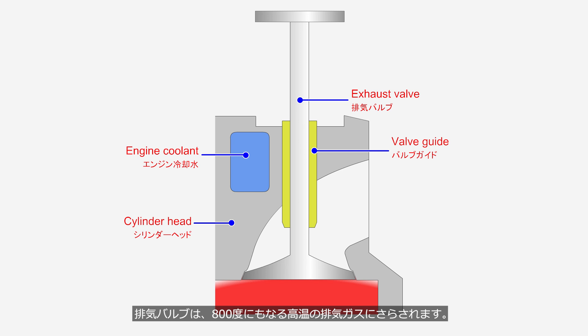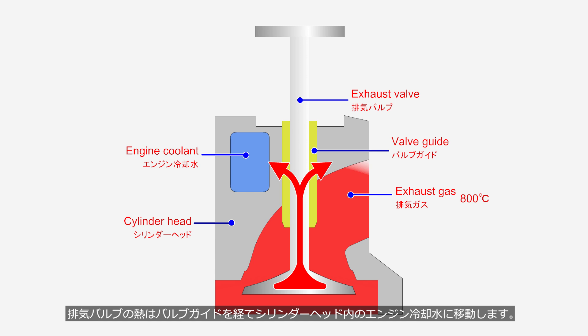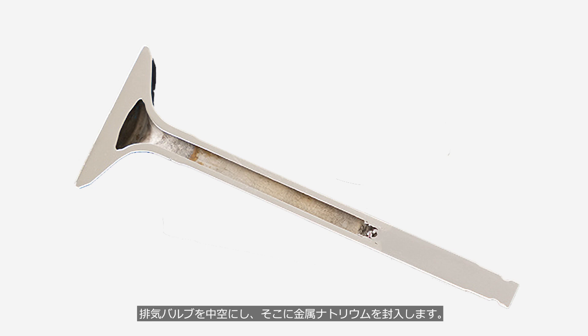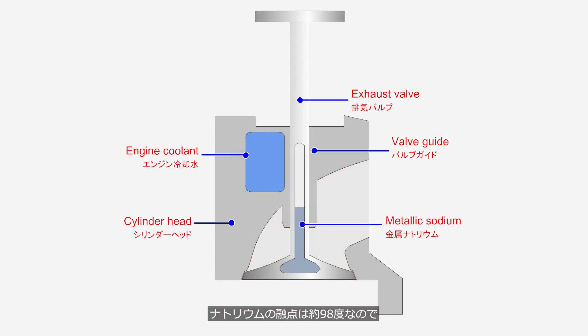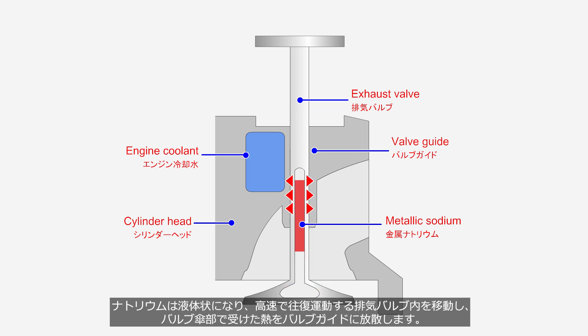The exhaust valve is exposed to exhaust gases that can reach temperatures as high as 800 degrees Celsius. The heat of the exhaust valve is transferred through the valve guide to the engine coolant inside the cylinder head. In thermally demanding engines, such as turbocharged engines, some engines use sodium-filled valves. The exhaust valves are made hollow and filled with metallic sodium. Sodium has a melting point of about 98 degrees Celsius, so during engine operation it becomes liquid and moves inside the exhaust valve, which reciprocates at high speed, transferring the heat absorbed by the valve head to the valve guides.